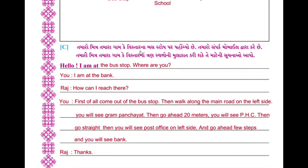Now practice the dialogue. One person is at the bus stop and says: Hello, I am at the bus stop, where are you? The other replies: I am at the bank. The first person asks: How can I reach there? You give directions: First of all, come out of the bus stop, then walk along the main road on the left side.